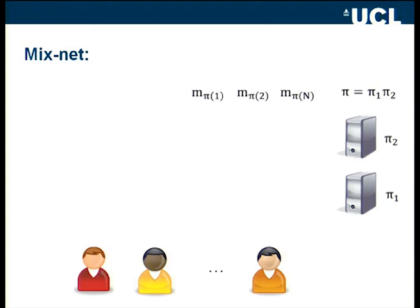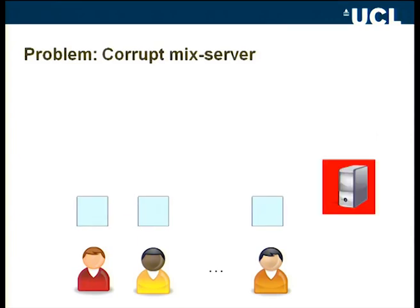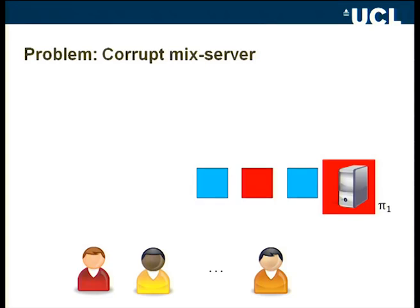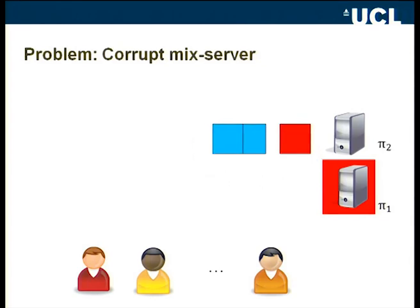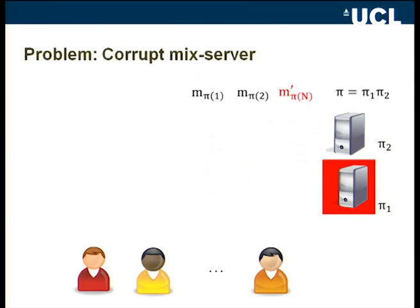But what happens if one mix server is corrupt? Suppose the first mix server instead of shuffling everything replaces some votes with new ciphertexts. Nobody can detect this because the shuffling operation normally prevents linking input to output, and new ciphertexts look completely different from the inputs anyway. After decryption we see that part of the messages are replaced with something new, meaning this corrupt server can change the outcome of the election. We have to prevent this.